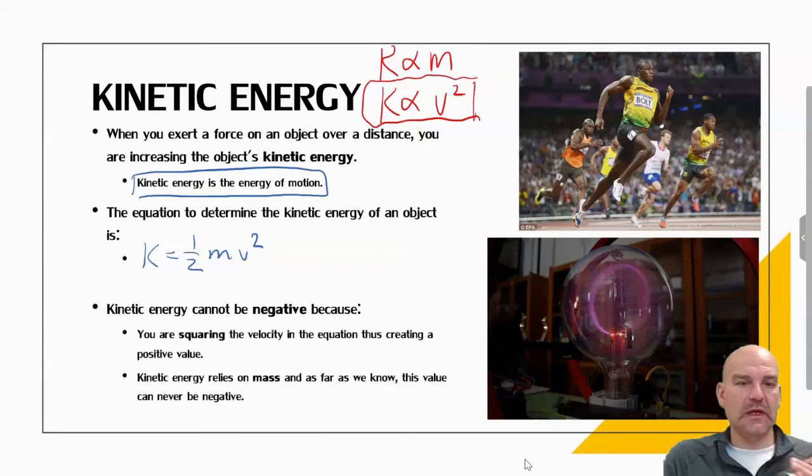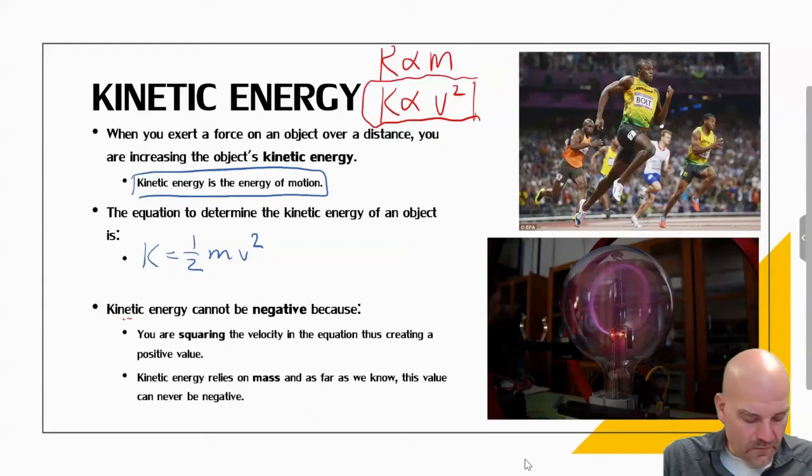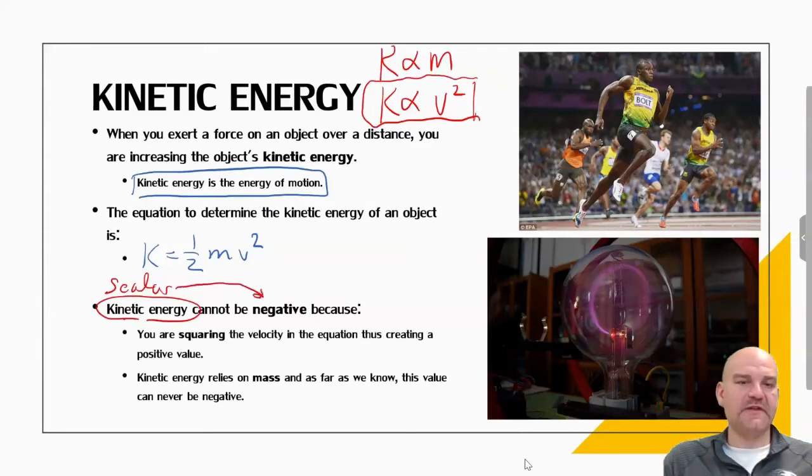Kinetic energy or all forms of energy is going to be scalar. So what does that mean? It doesn't matter the direction. And one thing to note is that kinetic energy can never be negative.